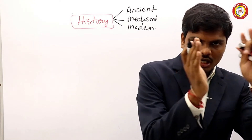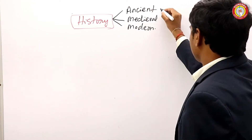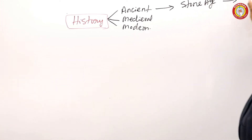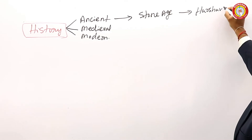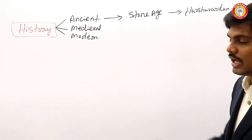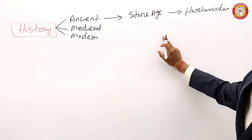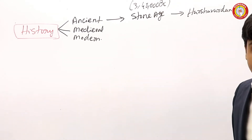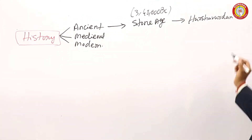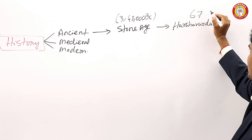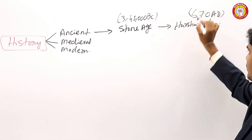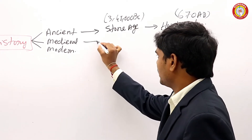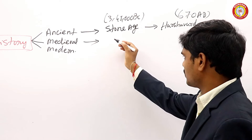Ancient history falls from the Stone Age to Harsha Vardhana. The timeline of ancient Indian history starts from around 3,48,000 BC and ended around 670 AD. Coming to medieval India, early medieval India starts from 712 AD.